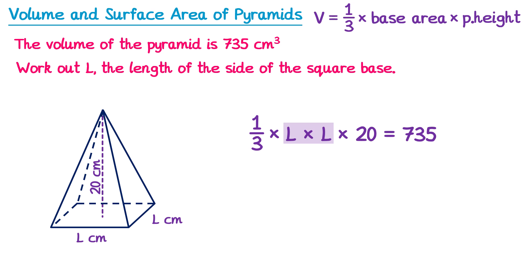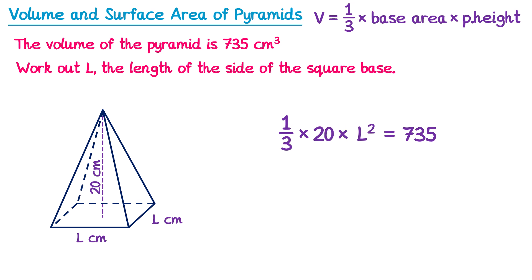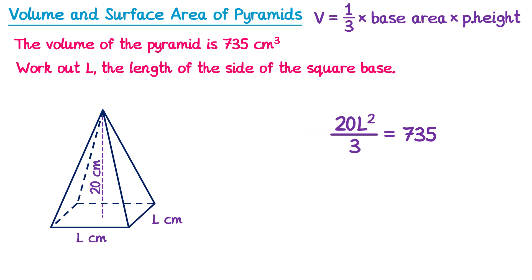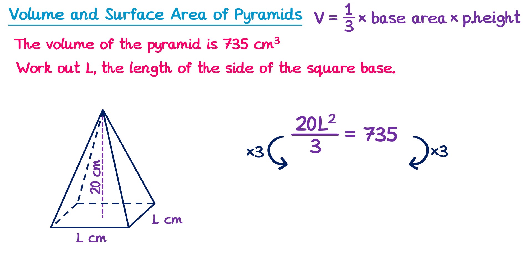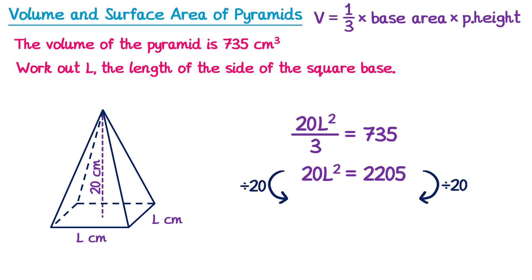Here we can multiply l by l, which gives l squared. So we have one-third multiplied by l squared multiplied by 20. We can change the order of multiplications to get one-third multiplied by 20l squared, or 20l squared over 3. So now we solve this equation. Just like in the previous question, we begin by multiplying both sides by 3 — the 3s cancel on the left to give 20l squared, and on the right 735 multiplied by 3 is 2205. Then we divide both sides by 20, cancelling the 20 on the left to leave l squared.